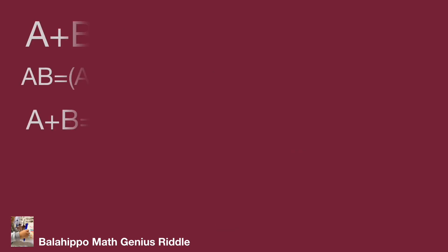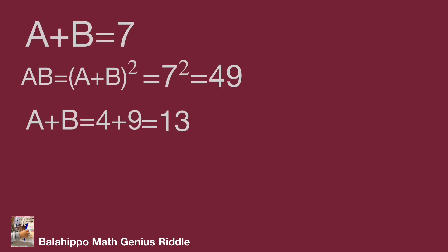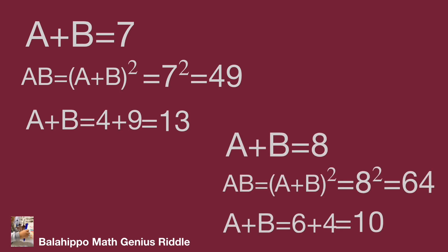While A plus B equals 7, the same math operations lead to A plus B equals 4 plus 9 equals 13. It is not the answer. While A plus B equals 8, we get A plus B equals 6 plus 4 equals 10. It is not the answer.